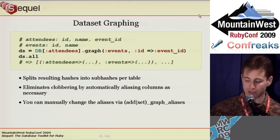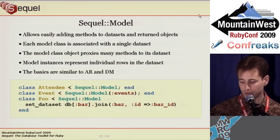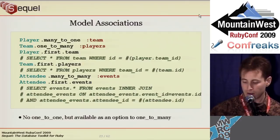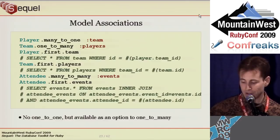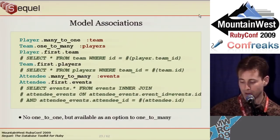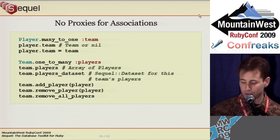On to Sequel models. Model classes are backed by dataset instances, and model instances represent single rows in the dataset. Sequel doesn't require a plain table for a model — you can use a join dataset, an ordered dataset to return rows in a certain order by default, or a filtered dataset to restrict the model to a subset of rows. Sequel didn't have associations when I started using it — people generally wrote their own instance methods. That's easy in Sequel, but if you want caching, callbacks, reflection, eager loading, and methods to add or remove associated objects, it's a lot more work. Associations handle all that for you, created with method names that reflect the database relationship rather than imply ownership.